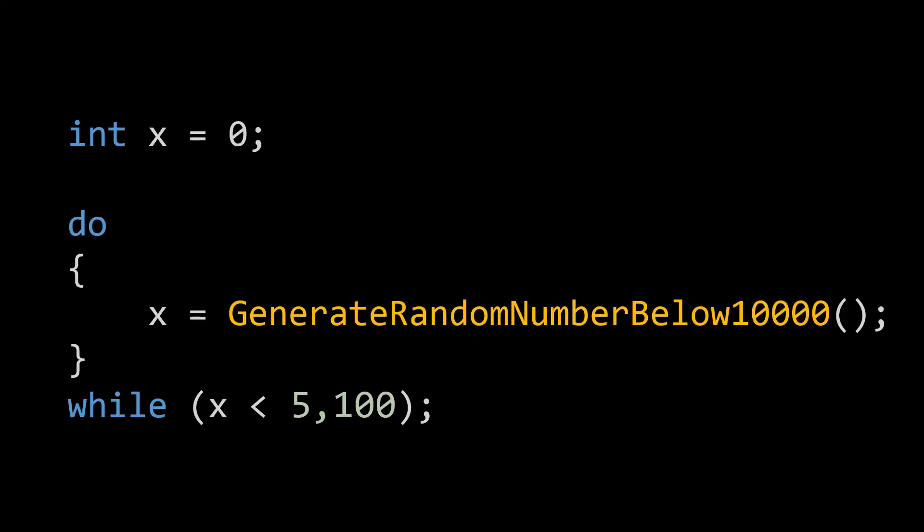Here's a while loop. A do while loop to be more specific. This looks simple enough. If we generate 10,000 random numbers, we should expect that around half of the numbers we generate would qualify to terminate the while loop. Right?